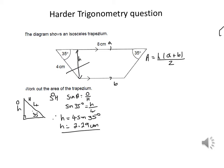Now working out the adjacent: taking the same right-angled triangle, I'll call that side X. Because it's an isosceles trapezium, the other side is also X. Subtracting 2X from 8 will give me the length of the other parallel side B. Using the cosine ratio — we've got A and the hypotenuse — I can say cos 35 equals X over 4. Therefore X equals 4 cos 35, which equals 3.28.